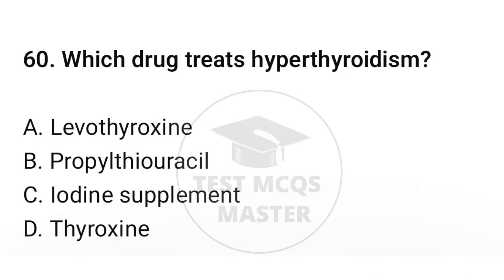Question number sixty: which drug treats hyperthyroidism? The correct option is B: Propylthiouracil.